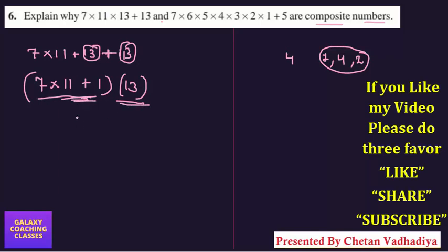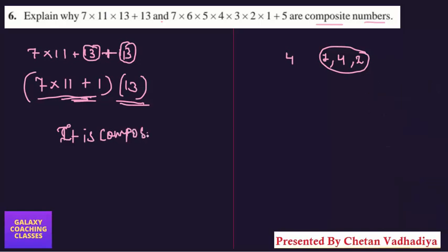Let me explain the second one. Here you are having 7×6×5×4×3×2×1+5.